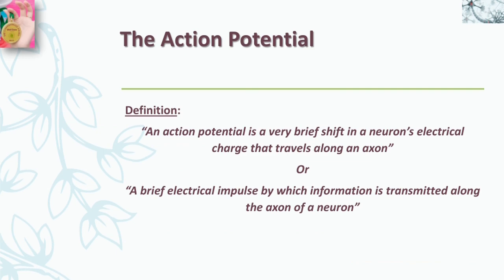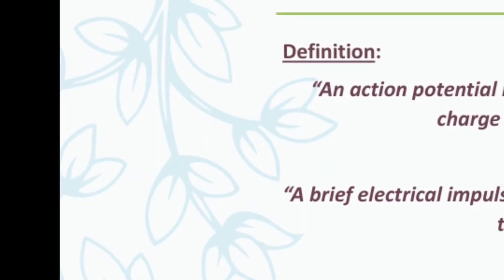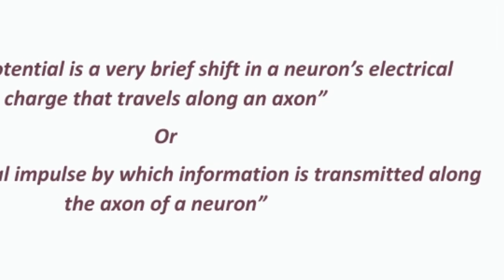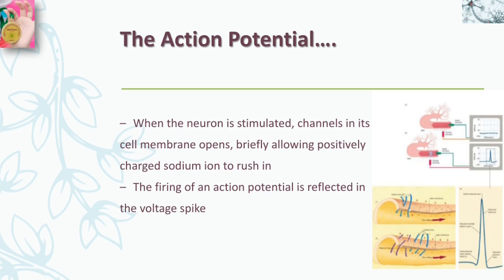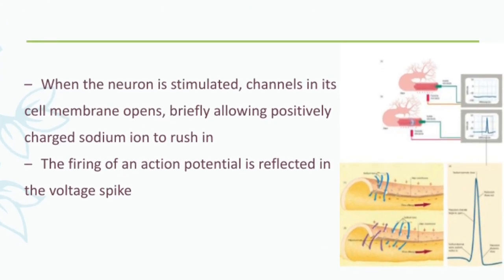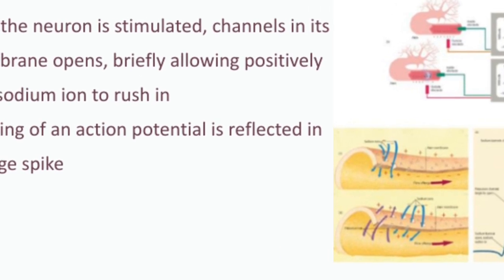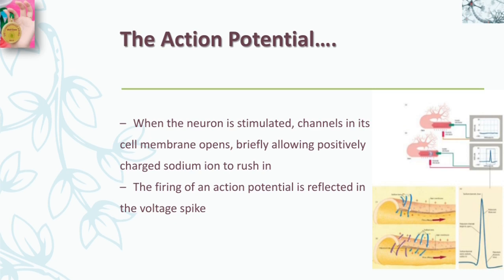Now let's come to the action potential. The first definition: an action potential is a brief shift in a neuron's electrochemical charge. The second definition: a brief impulse by which information is transmitted along the axon of a neuron. As long as the voltage of a neuron remains constant, the cell is quiet and no messages are being sent. When the neuron is stimulated, channels in its cell membrane open briefly, allowing positively charged sodium ions to rush in. The neuron's charge becomes less negative — or even positive — creating an action potential: a brief shift in a neuron's electrical charge that travels along an axon.